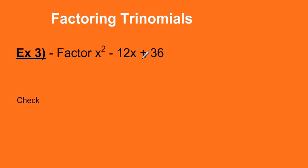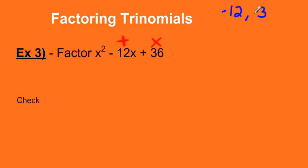The next example is x squared minus 12x plus 36. I'm looking for two numbers that multiply to give me 36 and add to give me negative 12. Two numbers that come to mind are 12 and 3. They multiply to give a positive, so either they're both positive or both negative. They add to give a negative, so they can't both be positive — they must both be negative. Let's try negative 12 and negative 3: their product is positive 36, but negative 12 plus negative 3 is negative 15, not negative 12. So those are not the numbers.